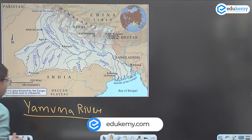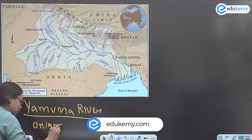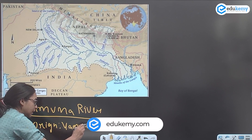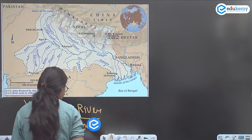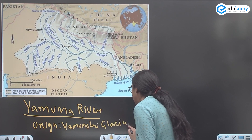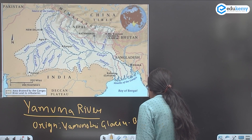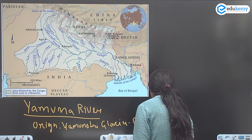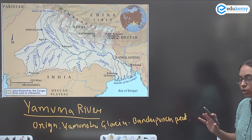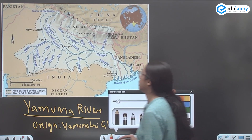The origin of Yamuna is the Yamunotri glacier, which is located in the Bandar Pooch peak. So, the origin of Yamuna is Yamunotri and Bandar Pooch peak.